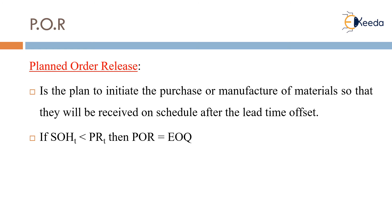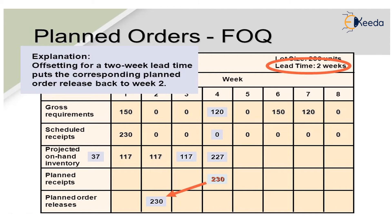If the stock on hand (SOH) is less than the planned order releases, then the planned order releases will equal the EOQ, or economic order quantity. For example, with a fixed order quantity (FOQ), offsetting a two-week lead time puts the corresponding planned order releases back to week two.